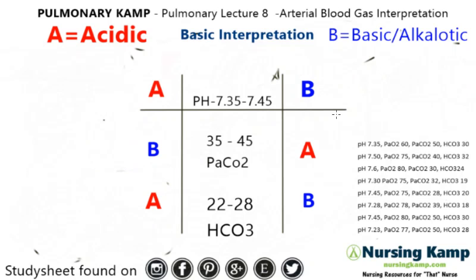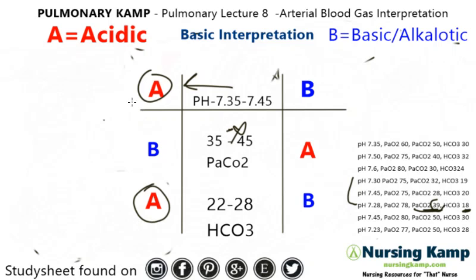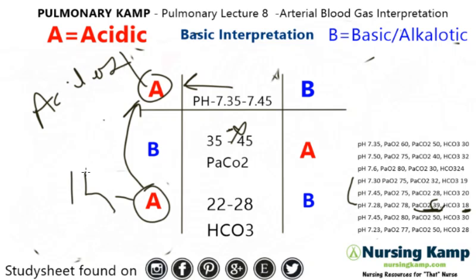Next one — pH is 7.28, which is closer to the acidic side. PCO2 is 39, so it's in the normal range. Bicarb is 18. We match the two letters — it's acidosis, and the bicarb side is the metabolic area — that's the kidneys. So metabolic acidosis.